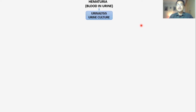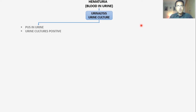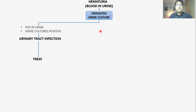Whenever a patient presents with the complaint of blood in urine or hematuria, the first thing you need to do is order two tests: urinalysis and urine culture. If there is pus in urine and urine cultures are positive, it means there is an infection — a urinary tract infection — and you have to treat it.